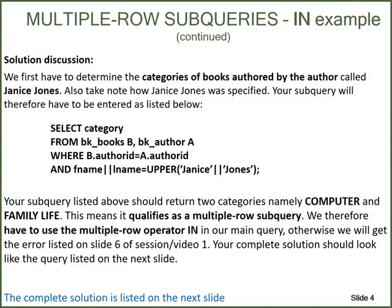We first have to determine the categories of books offered by the author called Janice Jones. Also take note of how Janice Jones was specified. Your subquery will therefore be: SELECT category FROM BK_Books B, BK_Offer A, WHERE B.OfferID equals A.OfferID, and FNAME concatenated with LNAME equals UPPER('JaniceJones'). The examiner specified that you have to look for the categories that Janice Jones has published, and her name has been specified in mixed case.